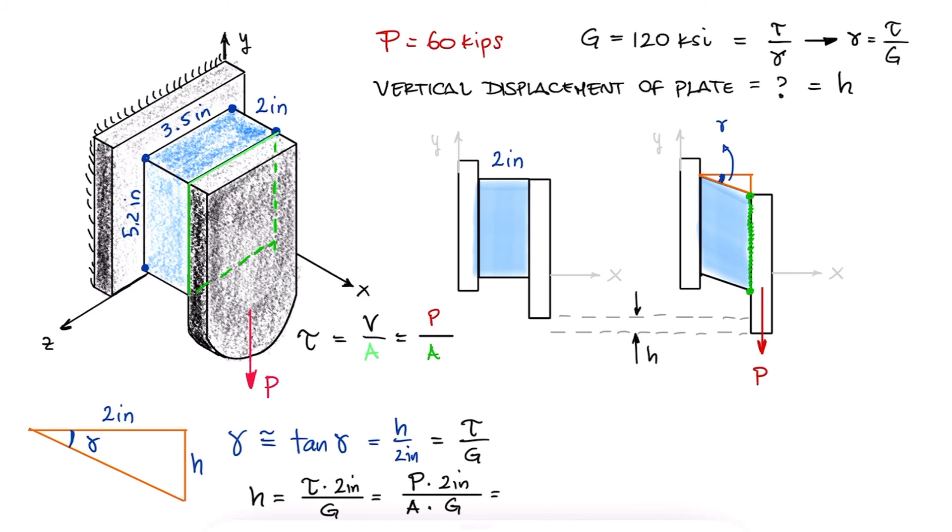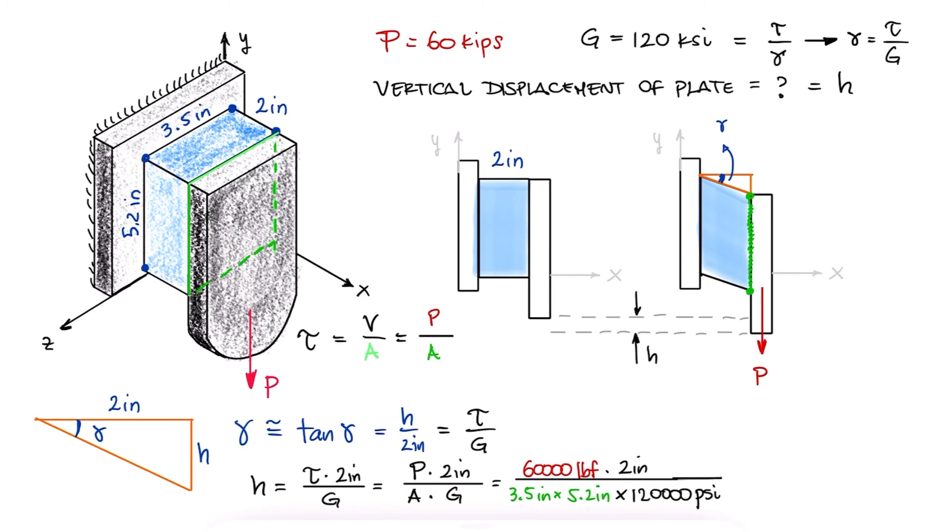Substituting the given values, we find a displacement of 55 thousandths of an inch.